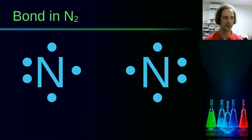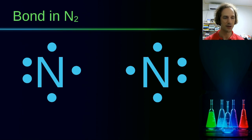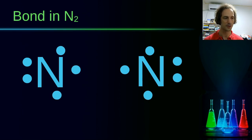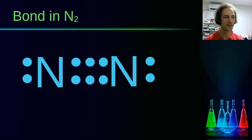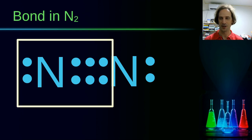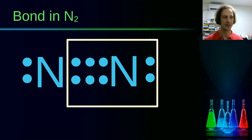For nitrogen, which has three electrons drawn as unpaired in our Lewis diagram, we can pair these unpaired electrons with electrons in the other nitrogen atom. Moving them closer together, we now have six electrons shared between the two nitrogen atoms, and each nitrogen atom has eight electrons.